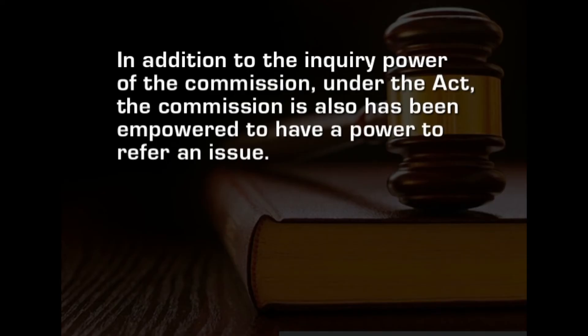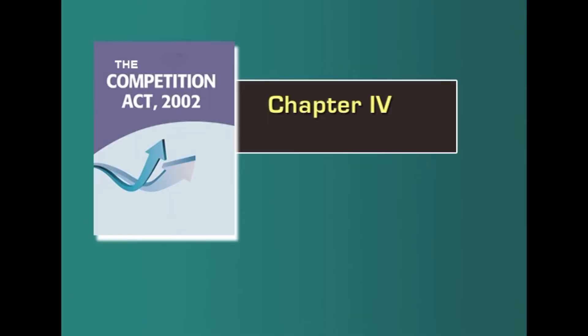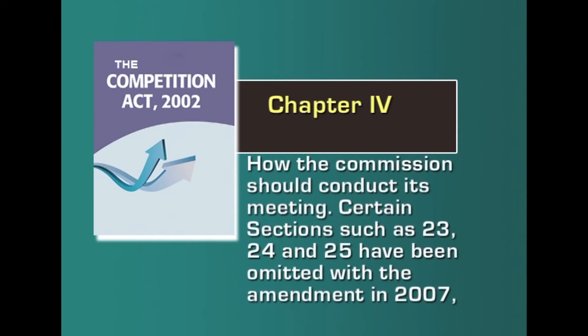In addition to the enquiry power, the Commission is also empowered to refer an issue. Similarly, a statutory authority has also been conferred a power to refer an anti-competitive issue to the Commission. Sections 23, 24, and 25 have been omitted with the amendment in 2007. They remain relevant because those that have been repealed or amended also become relevant for the purpose of existing cases — it is important to understand what sections have been amended, withdrawn, or omitted.